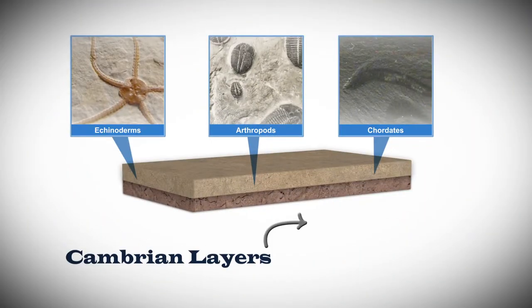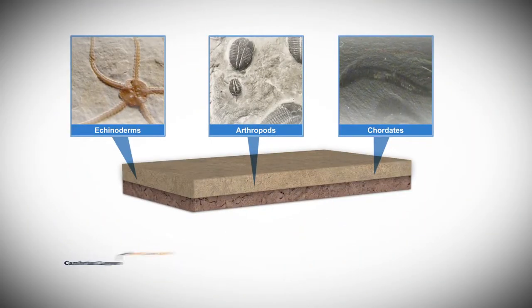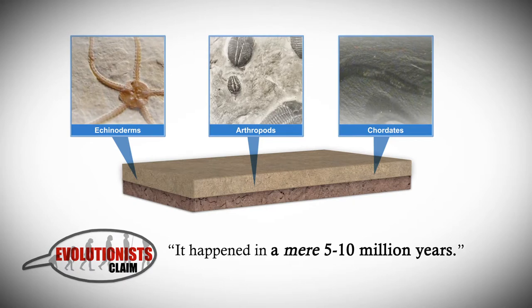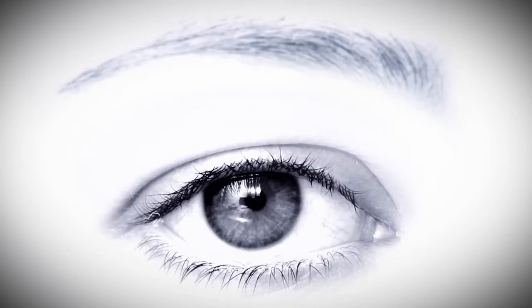The Cambrian layers show an amazing amount of diversity and complexity. Evolutionists claim it happened in a mere 5 to 10 million years, the equivalent to a blink of an eye in so-called geologic time.